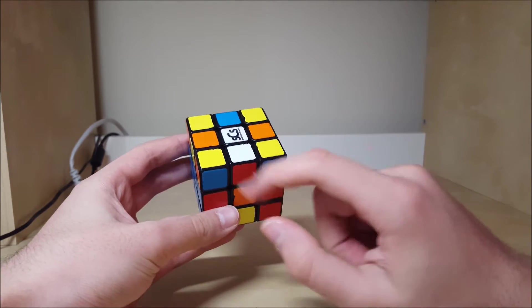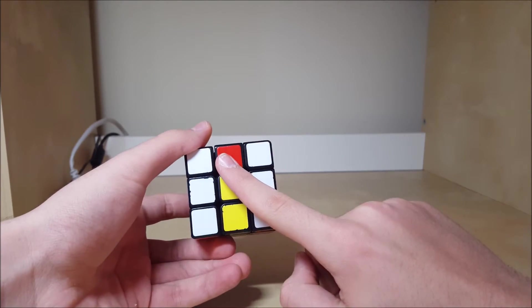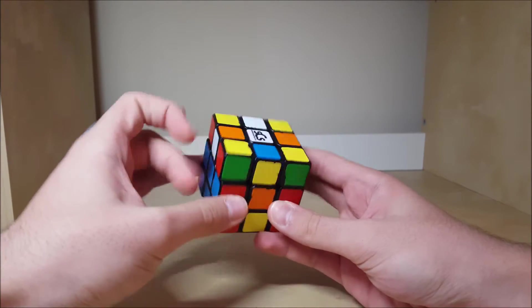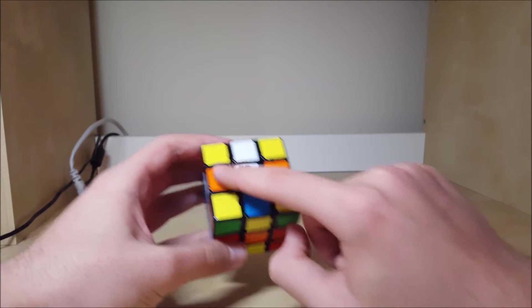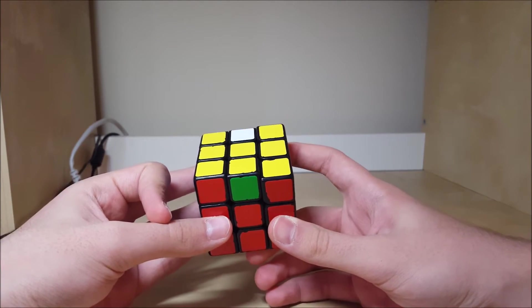What this is called is the arrow—there's three bad edges on top because they're not white or yellow, and one on bottom. And to solve it, you point the arrow at the bad edge, you turn the middle, the top, and then the middle, and that solves it.